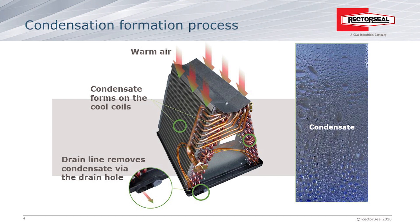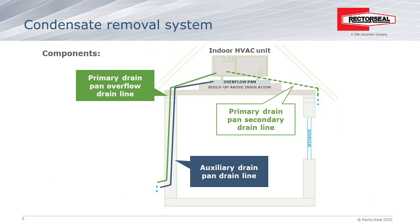At the bottom of the evaporator coil is a drain pan that collects the condensate water. These drain pans typically have two outlets: a primary drain outlet that carries condensation away, usually outside the home or office, and a secondary outlet in case the primary gets clogged. Float switches mount onto the secondary outlet so that if the primary drain line clogs, the water fills up, raises the float, and shuts the unit off to prevent the drain pan from overflowing.